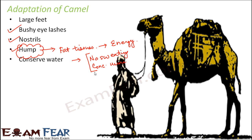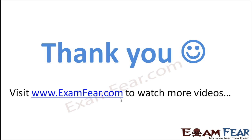In the desert, daytime is extremely hot but nights are extremely cold. The camel's thick coat over its body provides warmth during cold desert nights and also helps the camel sweat less. So the coat has a dual function: it helps conserve water and provides warmth at night.